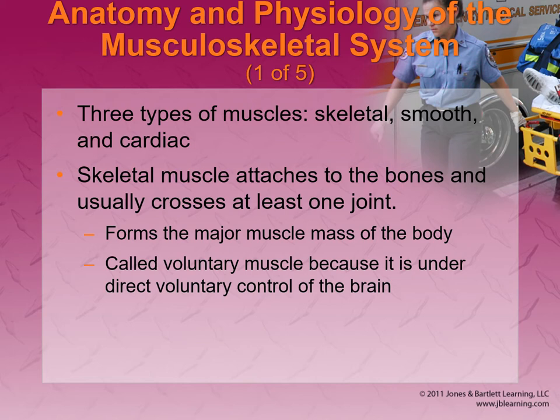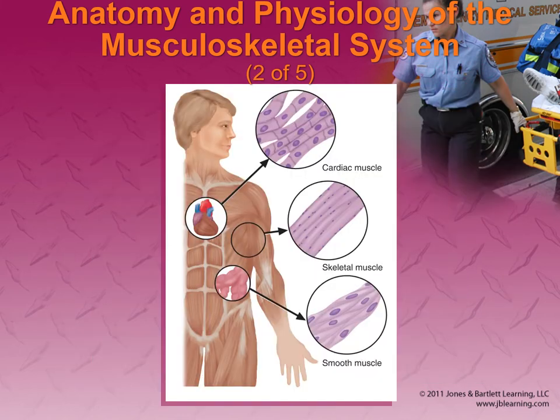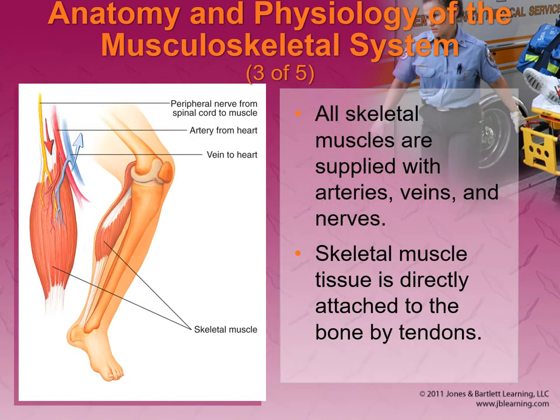This is just a quick anatomy and physiology review. Just remember that there are three types of muscles and they do different things. Cardiac is obviously in the heart. Skeletal is kind of voluntary muscle. Smooth muscle is kind of involuntary, like organs, stuff like that.